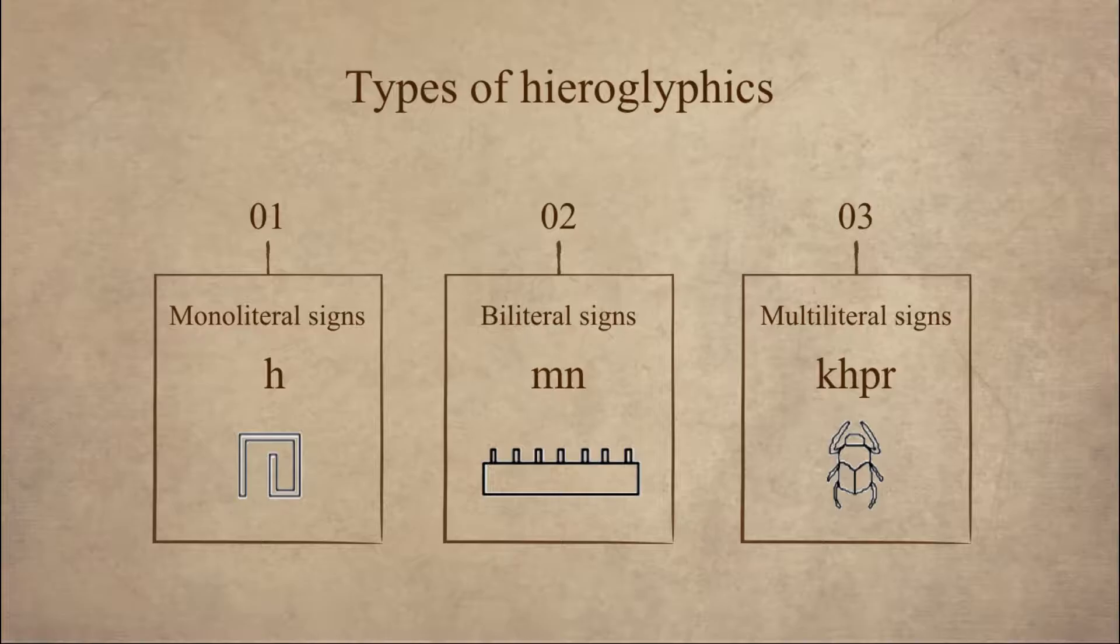And there are other kinds of hieroglyphics that transcribe more than two consonants. They are called multiliteral signs. This scarab that you see on the screen is read GEPER. And so through the next videos we're going to learn about all those biliteral signs.